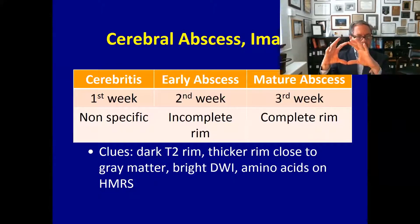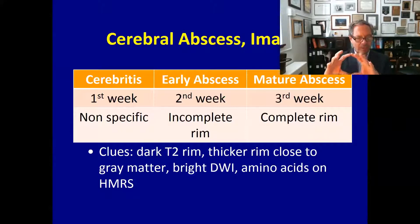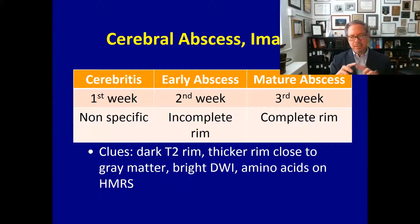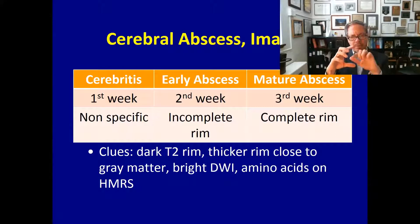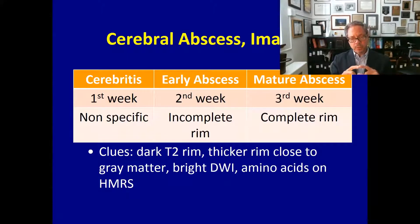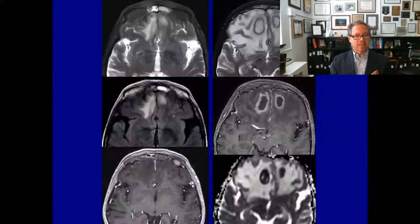The clues that a ring-enhancing lesion is an abscess are: the rim is dark on T2; the rim is thicker where it abuts the gray matter because the gray matter has increased cerebral blood flow and volume; the central aspect of the abscess is bright on diffusion weighted imaging showing restricted diffusion; and on proton spectroscopy you will find the presence of many amino acids, which are metabolic byproducts of bacterial metabolism.